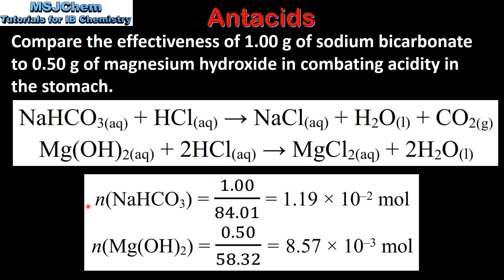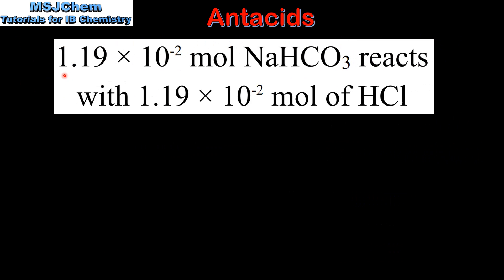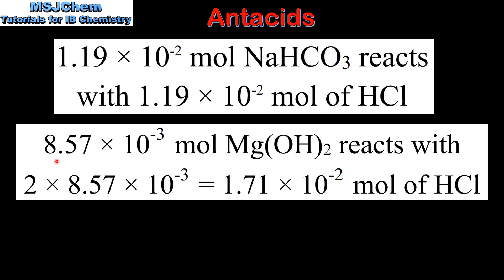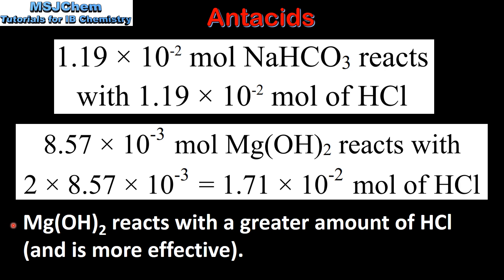The next step is to calculate the amount in moles of sodium bicarbonate and magnesium hydroxide using the equation: mass in grams divided by the molar mass. Here you can see the amount in moles of sodium bicarbonate and magnesium hydroxide. From the balanced equation, 1.19 × 10⁻² moles of sodium bicarbonate reacts with the same amount of hydrochloric acid due to the 1 to 1 ratio. 8.57 × 10⁻³ moles of magnesium hydroxide reacts with twice as much hydrochloric acid due to the 1 to 2 ratio. Therefore, 0.5 grams of magnesium hydroxide reacts with a greater amount of hydrochloric acid and is more effective at combating acidity in the stomach.